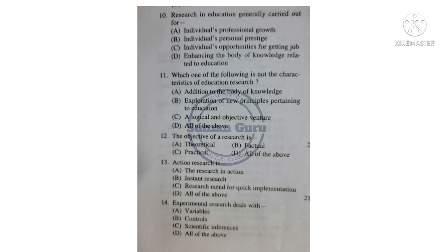Question 11: Which one of the following is NOT a characteristic of education research? Option A: Addition to the body of knowledge. Option B: Exploration of new principles pertaining to education. Option C: A logical and objective venture. Option D: All of the above. Answer is Option D: All of the above.